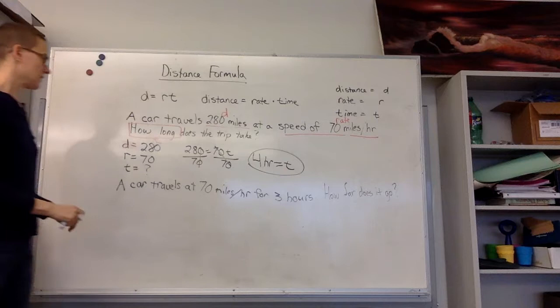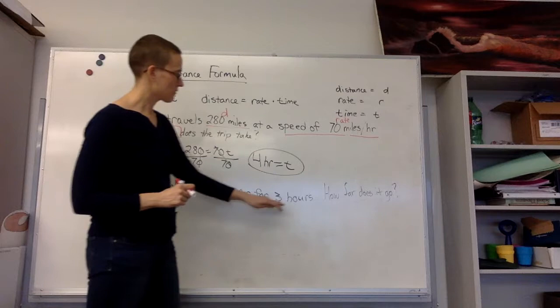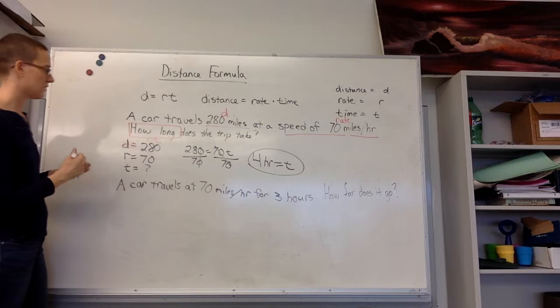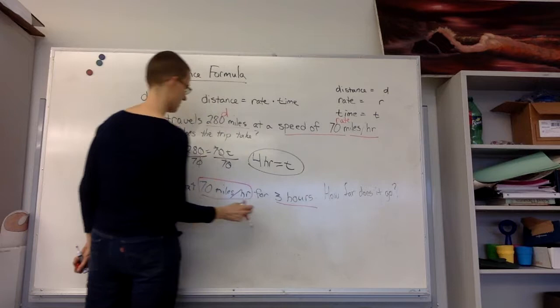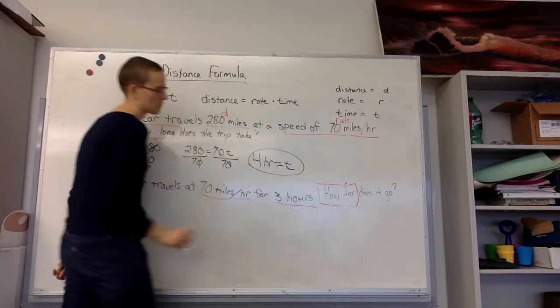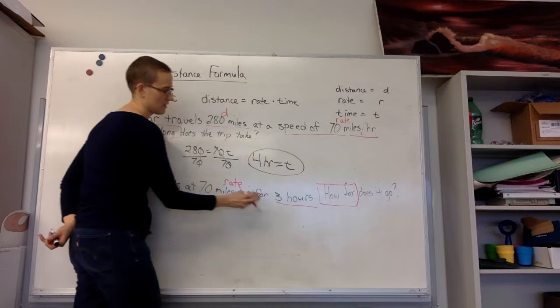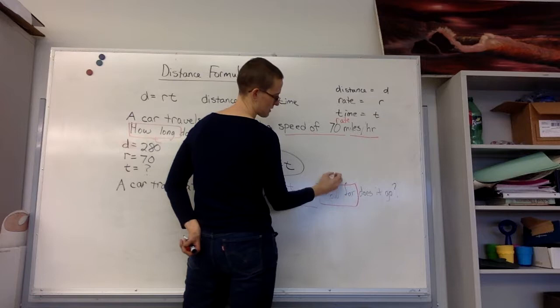Let's try another one. The next one says a car travels at 70 miles per hour for 3 hours. How far does it go? So we're going to start by breaking it apart. We have 70 miles per hour and 3 hours. How far does it go? So my miles per hour is my rate, my 3 hours is my time, and how far is talking about distance.